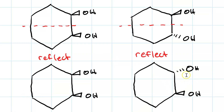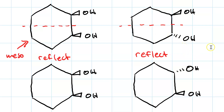Here's the enantiomer. And so, what that means is this molecule is meso — it's identical to its mirror image. Whereas this molecule is not. This molecule is chiral.